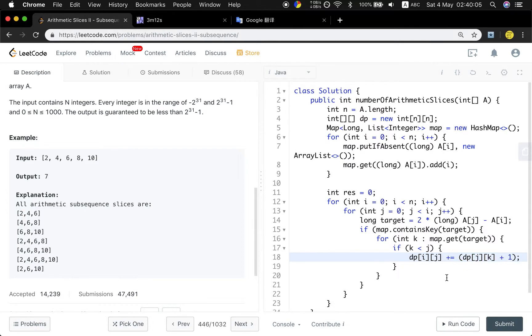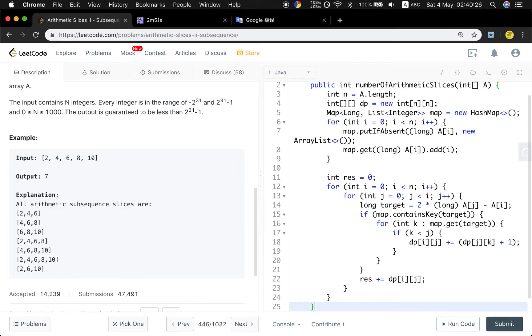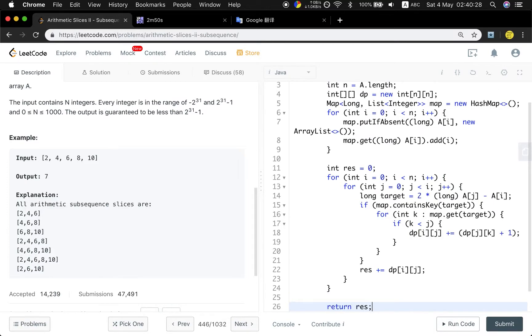And for every i, j, we will sum up dp[i][j] to our final result. And finally we will just return this result.